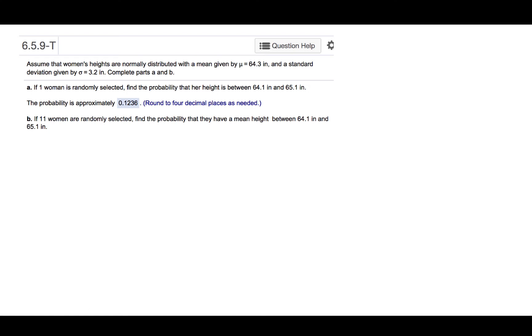Assume that women's heights are normally distributed with a mean given by mu equals 64.3 inches and a standard deviation given by sigma equals 3.2 inches. Complete parts A and B.